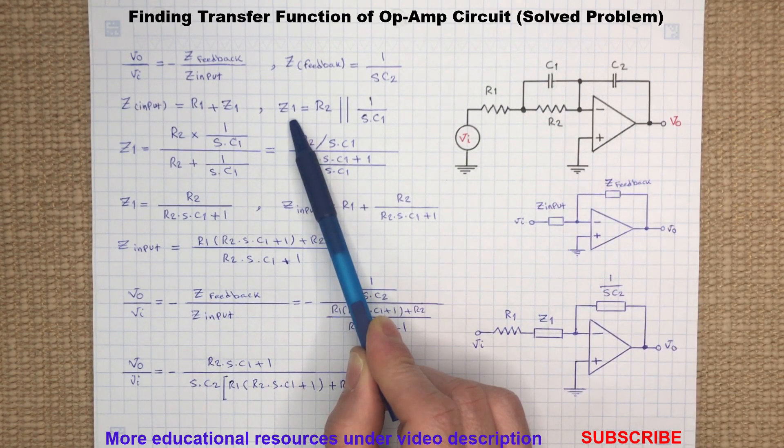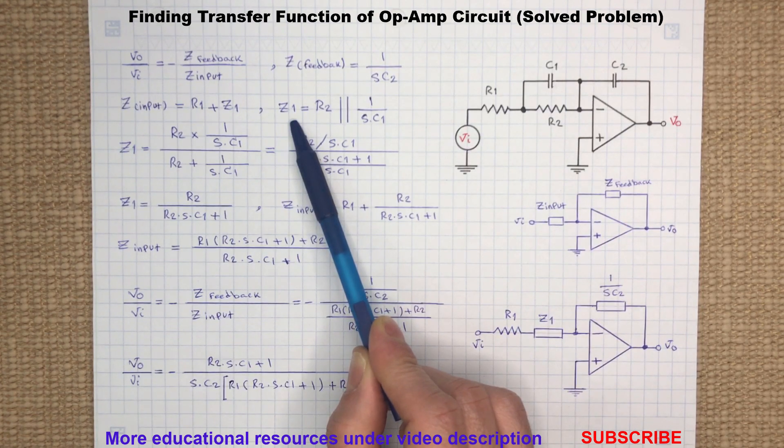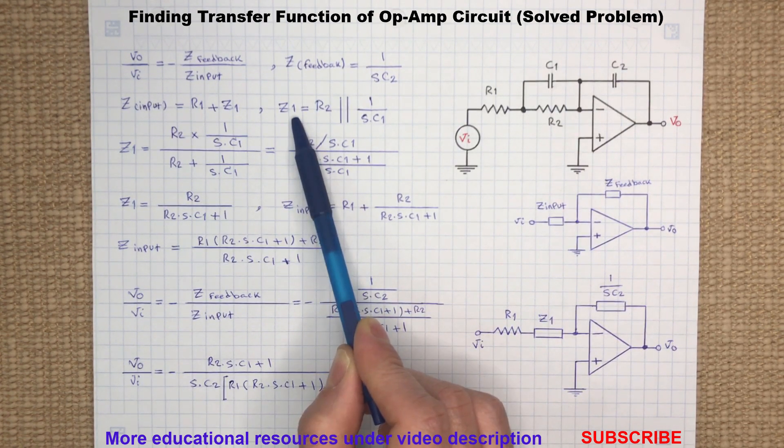So Z1 equals R1 in parallel with the impedance of C1, which can be calculated as follows.